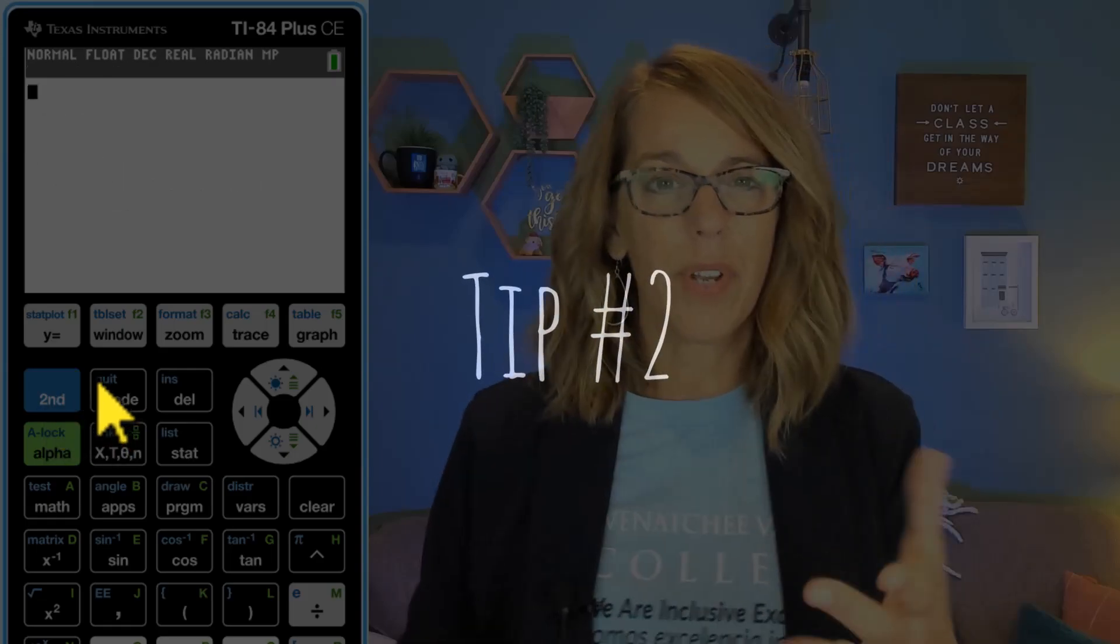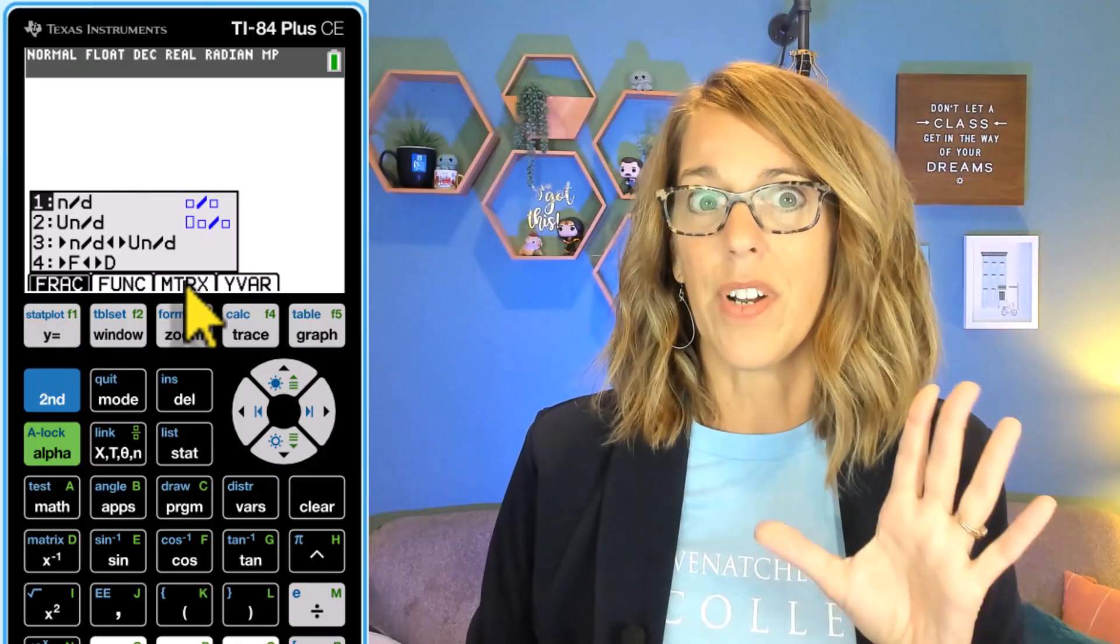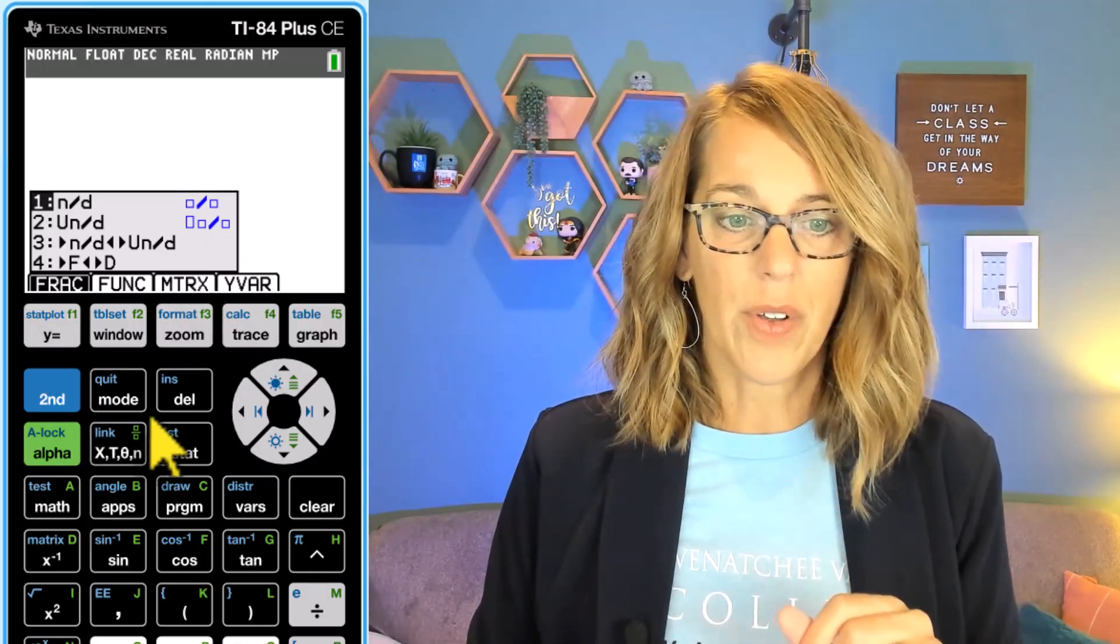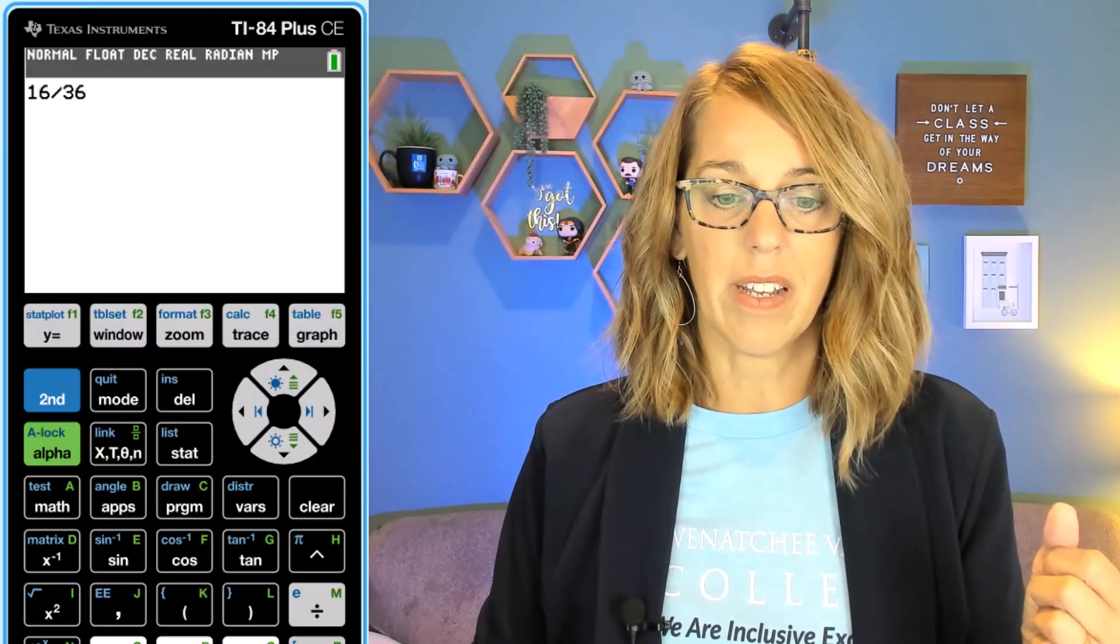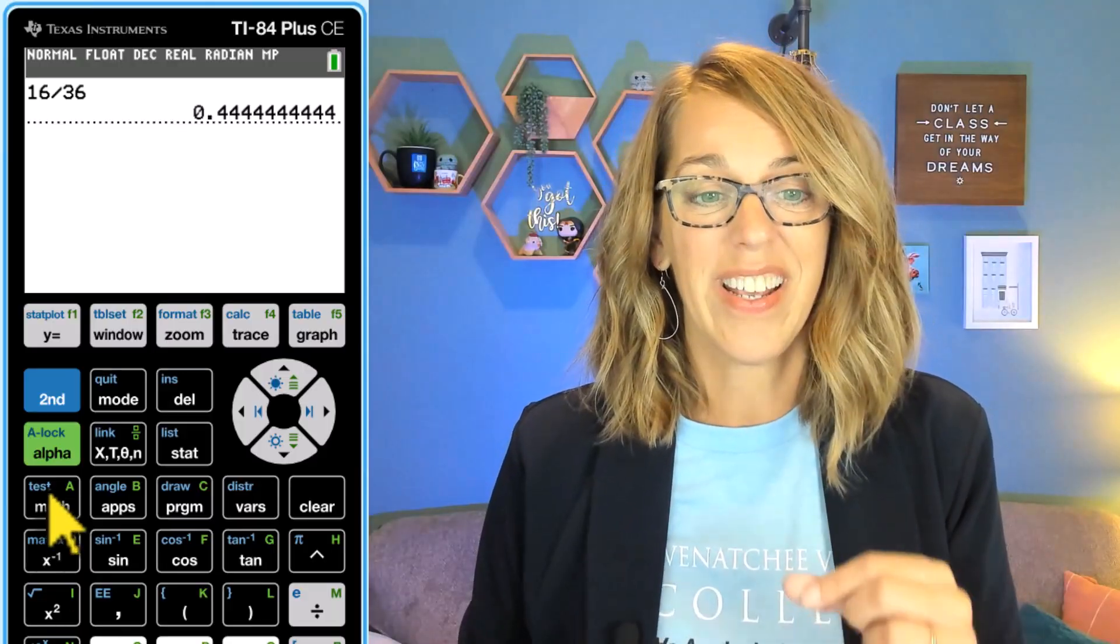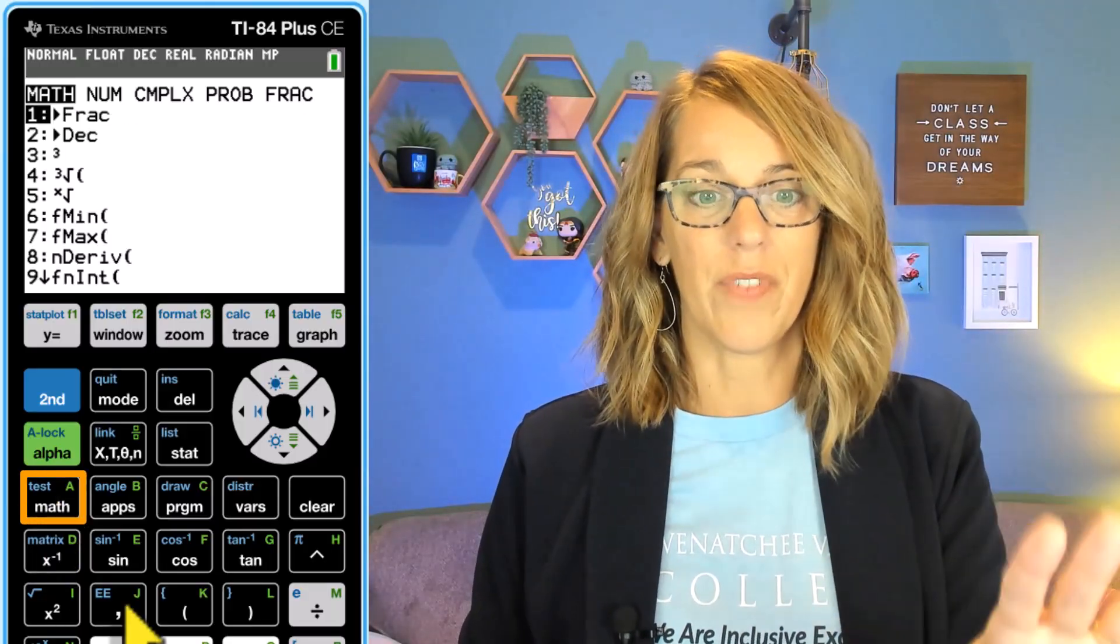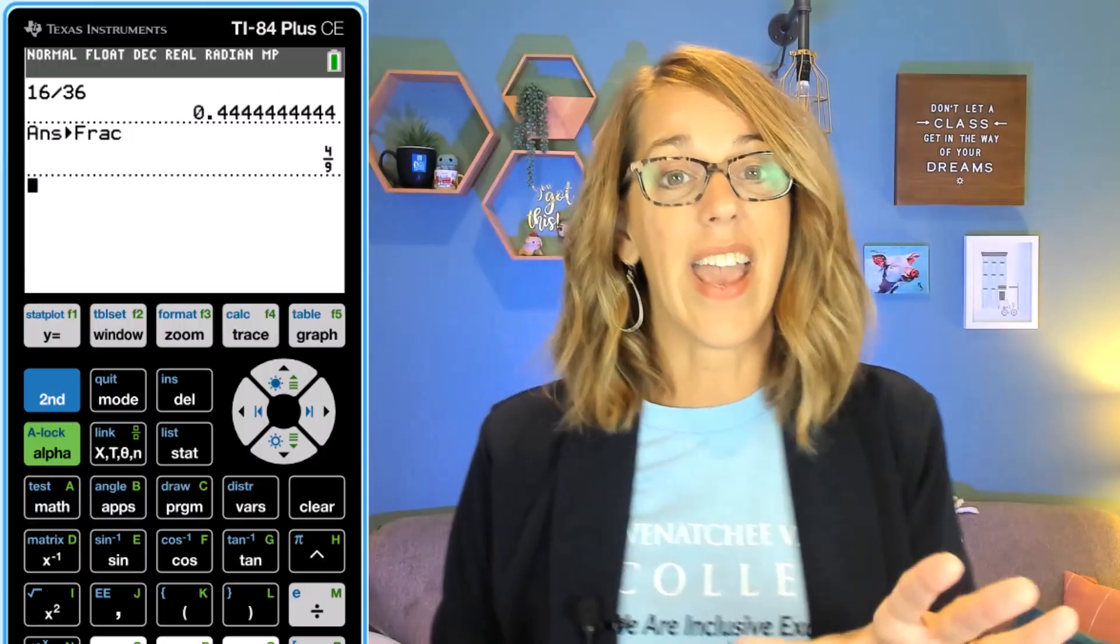I'm going to go second followed by quit and I want to make sure that you know the fraction capabilities of your calculator. Now you can get to fractions by doing alpha and then y equals to get to that f1 function and you've got several different fraction values here. For some of you, you might have that fraction print key on the variable key. Finally, and probably the most helpful fraction tool on your calculator is the convert to fraction. So let's say that I was doing something like 16 divided by 36 and I hit enter and I end up with this decimal but my answer choices are as fractions. I'm going to go to my math menu. The very first choice there is convert to fraction. I'm going to hit enter and I get that as a reduced fraction.